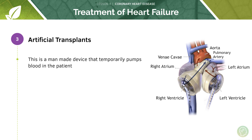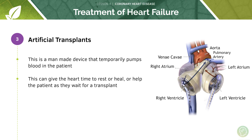An artificial heart can also be used — this is a man-made device that acts to emulate the function of the natural heart, temporarily pumping blood in the patient. This can give the heart time to rest or heal, or help the patient as they wait for a transplant.